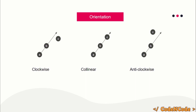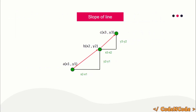So you are given three points and you have to return or print whether they are clockwise, anti-clockwise, or collinear. We will be using the slope of the lines — specifically, the slope of line AB and the slope of line BC — to determine whether the points A, B, and C are collinear, clockwise, or anti-clockwise.